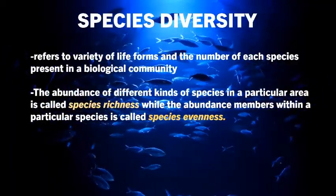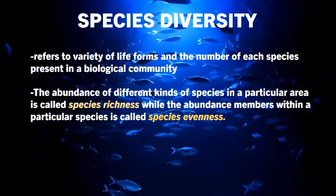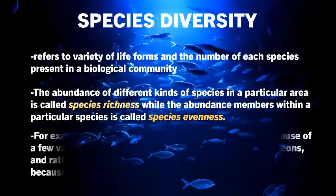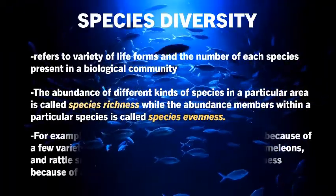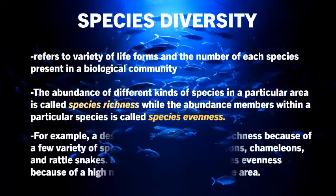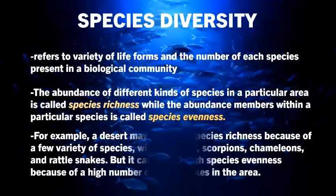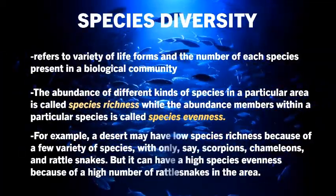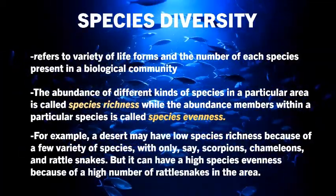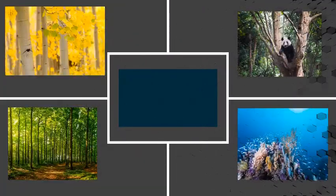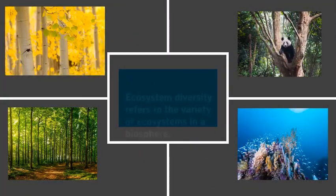For example, a desert may have low species richness because of few varieties of species — with only scorpions, chameleons, and rattlesnakes — but it can have high species evenness because of a high number of rattlesnakes in the area.